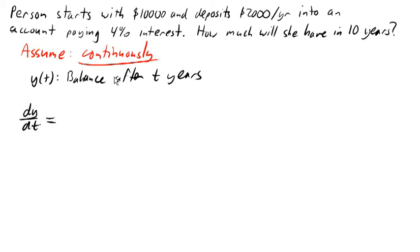If the balance here is being measured in dollars, then this is going to have units dollars per year. We want to ask, how is the account changing in terms of dollars per year? It's changing in two ways. Way number one is from this interest. We're earning 4% each year.